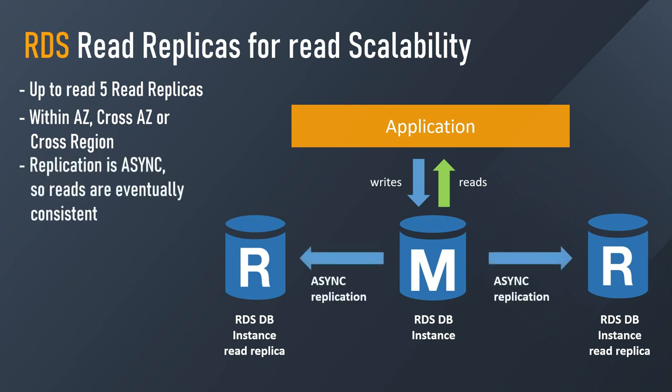There will be asynchronous replication between the main RDS database instance and the Read Replicas. Asynchronous means that reads are eventually consistent — for example, if your application reads from a Read Replica before the data had the chance to replicate, you may get old data. This is why it's called eventually consistent.